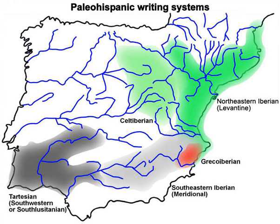There are just under 200 surviving inscriptions, one of which is exceptionally long — the third Botorrita bronze plaque with more than 3,000 signs containing a census of nearly 250 people. Almost always the direction of the writing is left to right. It seems that the earliest inscriptions in the Celtiberian script date from the 2nd century BCE, while the latest ones date from the 1st century BCE.